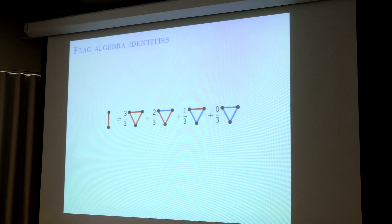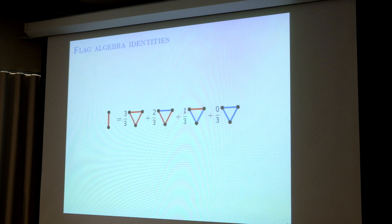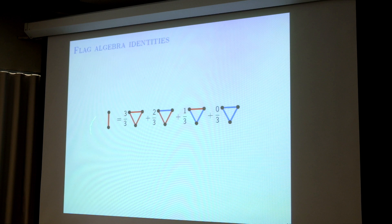Instead of just randomly choosing two vertices and looking at the probability of a red edge, you can first randomly choose three vertices. Out of these three vertices, you choose another two. You can say: what does this expression mean? It means I first randomly choose three vertices — giving one of the four cases — and then out of each case, what's the probability that I choose another two vertices and get a red edge? For example, for the red triangle case it is 3/3; for the next it is 2/3; and for the blue triangle case it is 0/3.